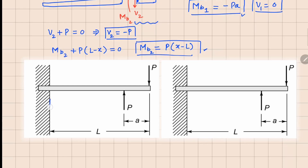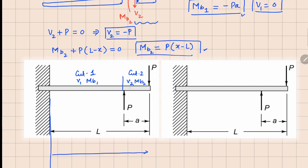So we have: V1 equals zero, M_b1 equals minus Pa, V2 equals minus P, and M_b2 equals P(x minus L). Let's plot the shear force diagram. Cut one covers this section and cut two covers this section. In section one, the value of V1 is zero, so from here to here we maintain a value of zero. In section two, V2 is minus P, so after this point we go down and maintain the value of minus P.